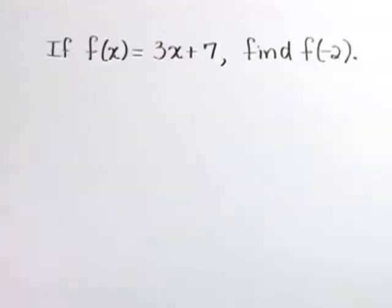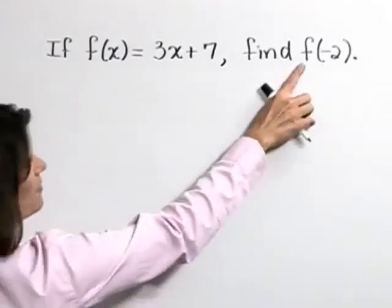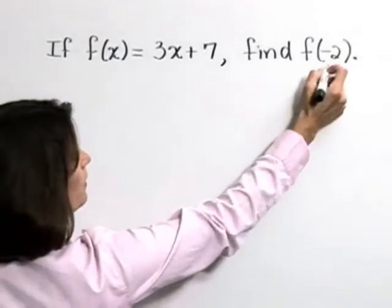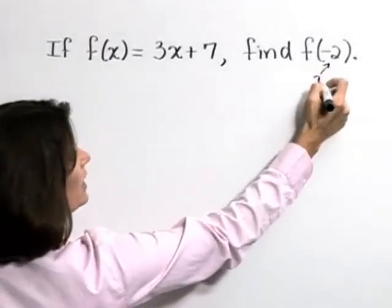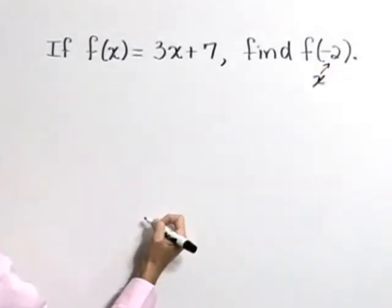If f of x is equal to 3x plus 7, find f of negative 2. This f of negative 2 means to substitute negative 2 in for x in our function.